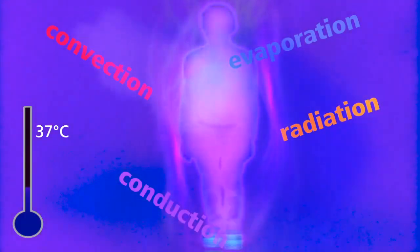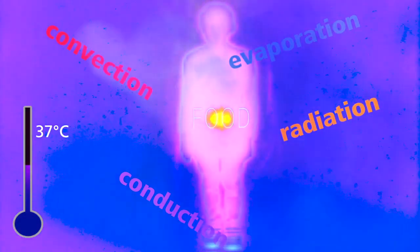To balance these heat losses, we have to convert the chemical energy in food into heat. Only when heat losses are balanced by heat gain do we maintain a healthy constant core temperature.